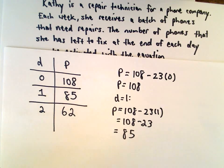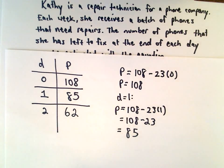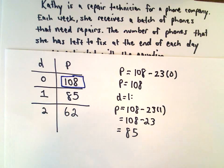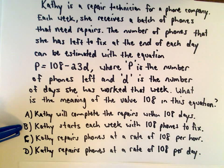But again, to go back what we said at the beginning, I think probably even doing this is overkill. If she works zero days, it says there's 108 phones left for her to fix, which tells me that answer choice B has to be what happens.